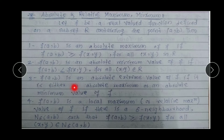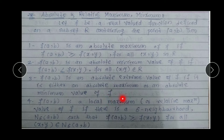F(A,B) is an Absolute Extreme value of F if it is either an Absolute Maximum or an Absolute Minimum value of F. If F(A,B) is either absolute maximum or absolute minimum, then we say that F(A,B) is an Absolute Extreme value of F.